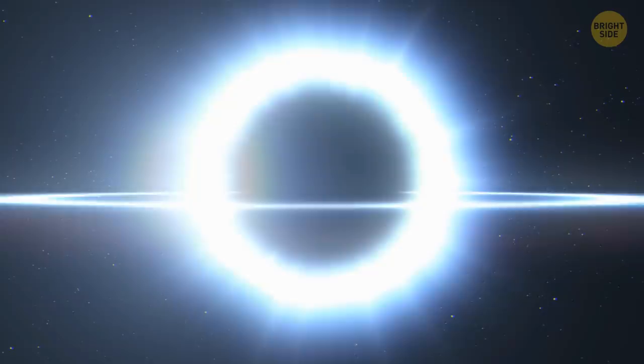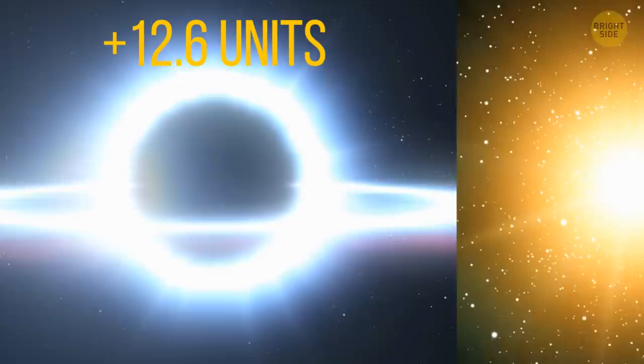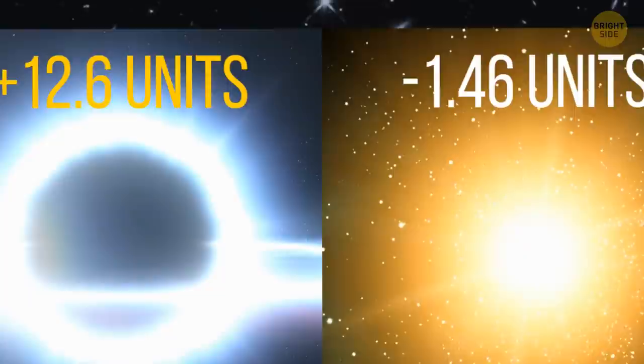It's also the brightest object in the entire universe. Their brightness is estimated at plus 12.6 units. At the same time, the brightest observed star has negative 1.46. And we can observe how the bright light of the quasar bends and forms an Einstein Cross.